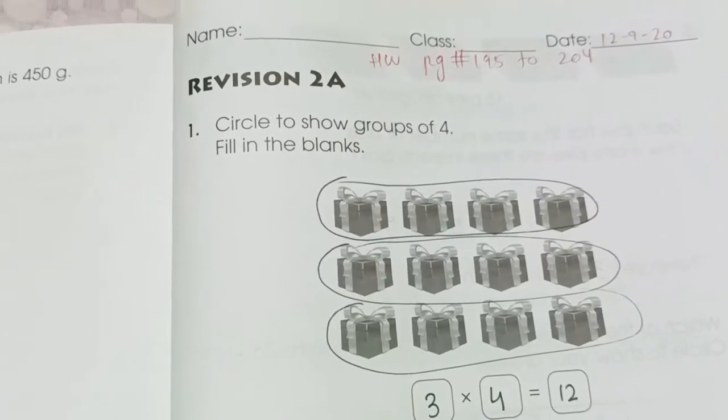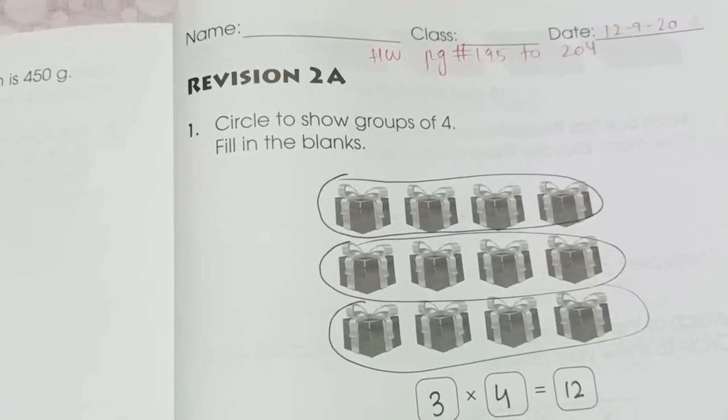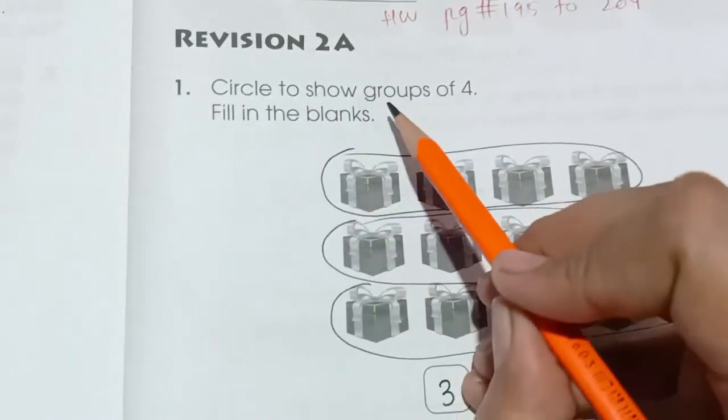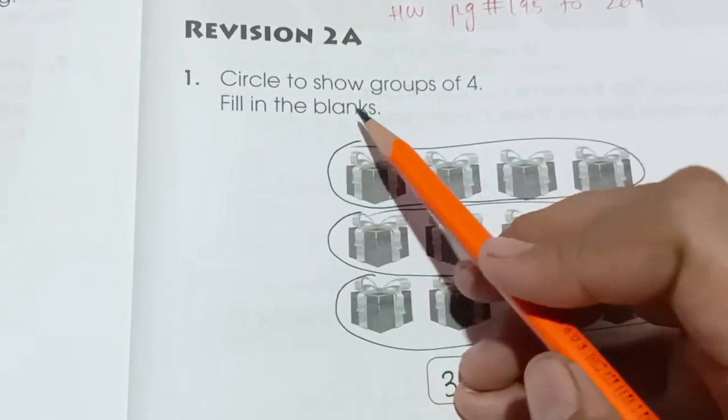Book 2A, Revision 2A, page number 195. Here we have the question, circle to show groups of 4 in the following.